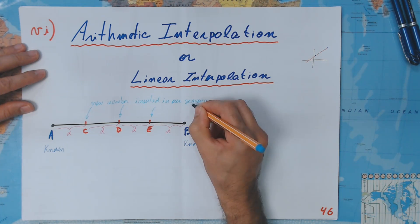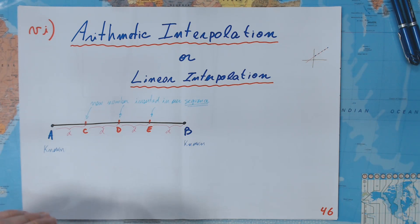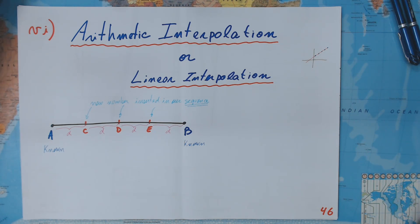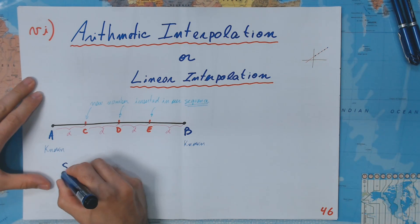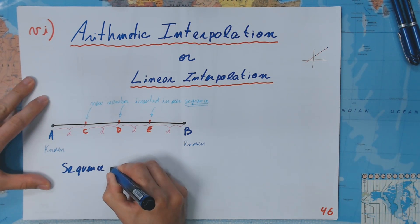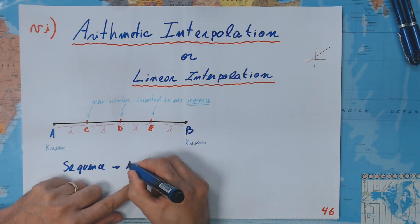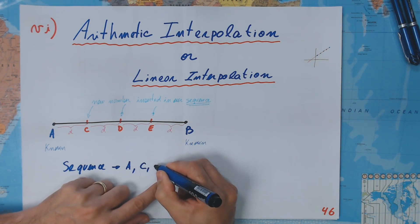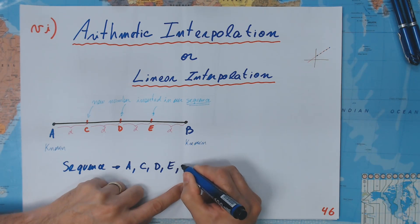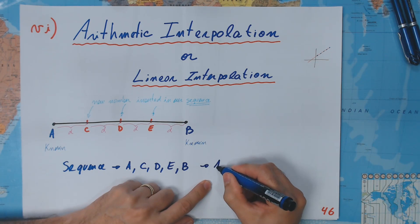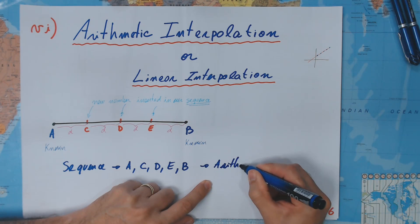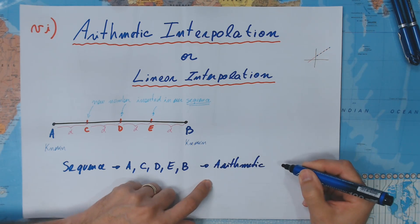The word sequence is very important because they are going to form a sequence. So our sequence is now going to be A, C, D, E, B — and that is going to be an arithmetic progression.